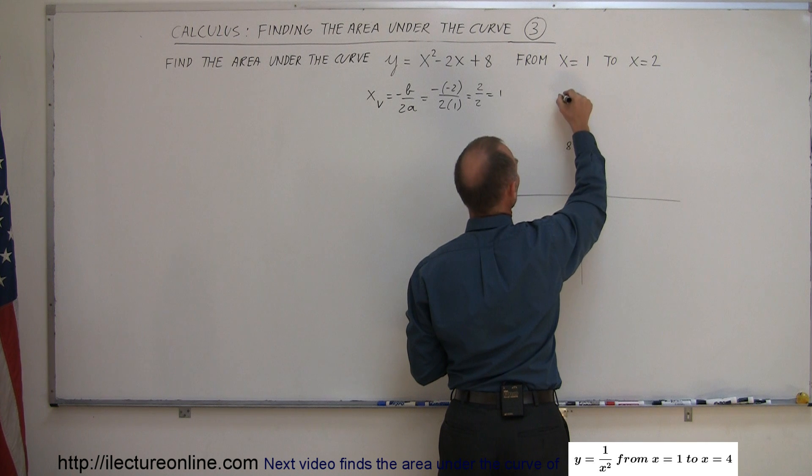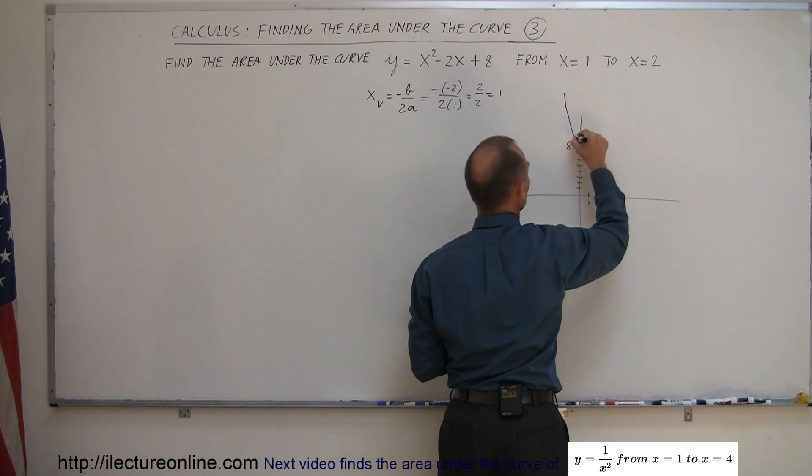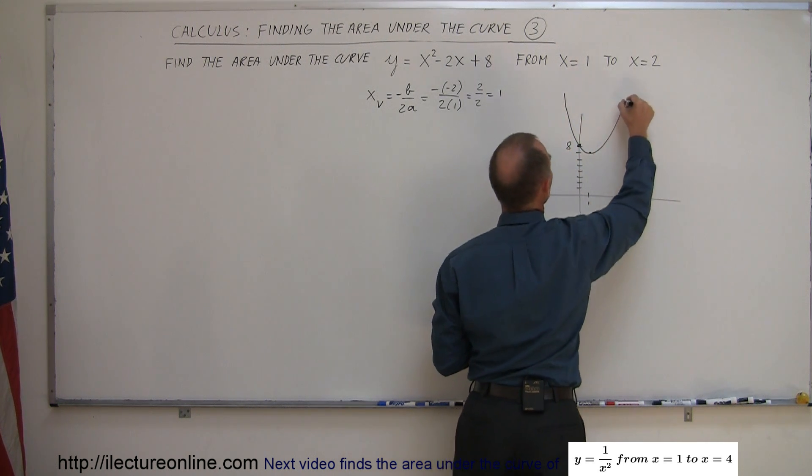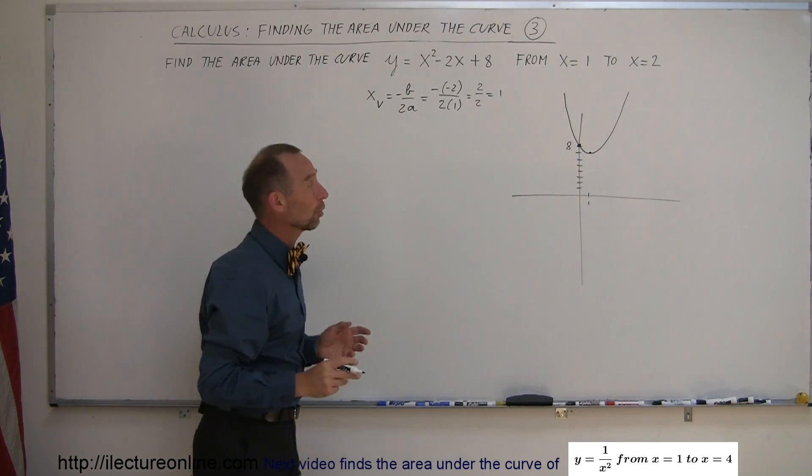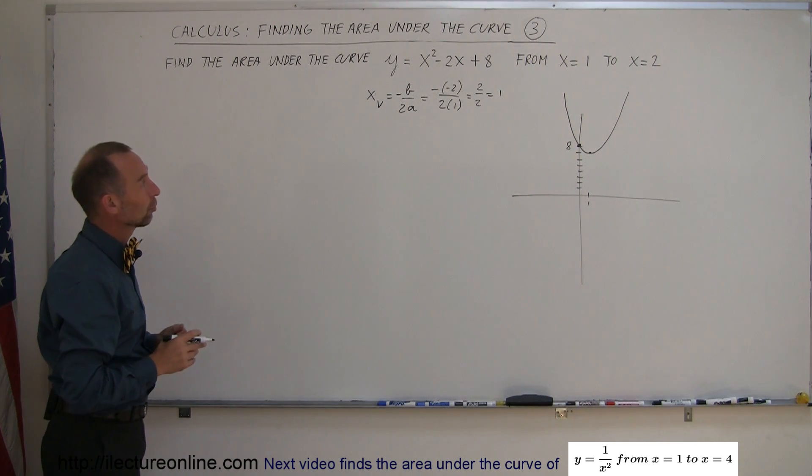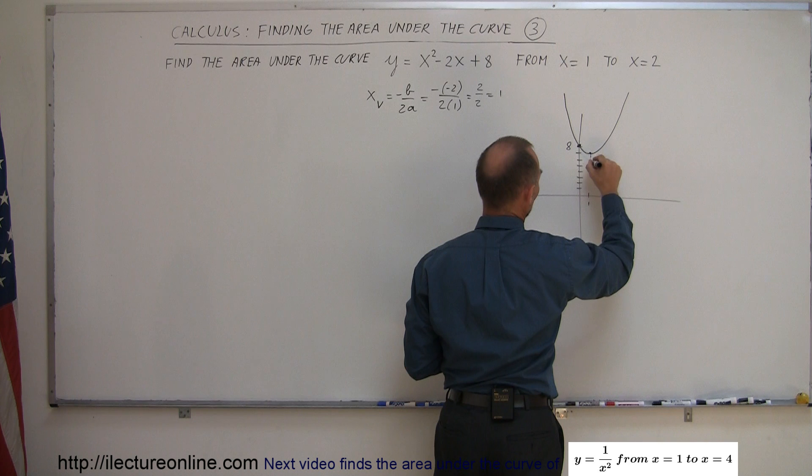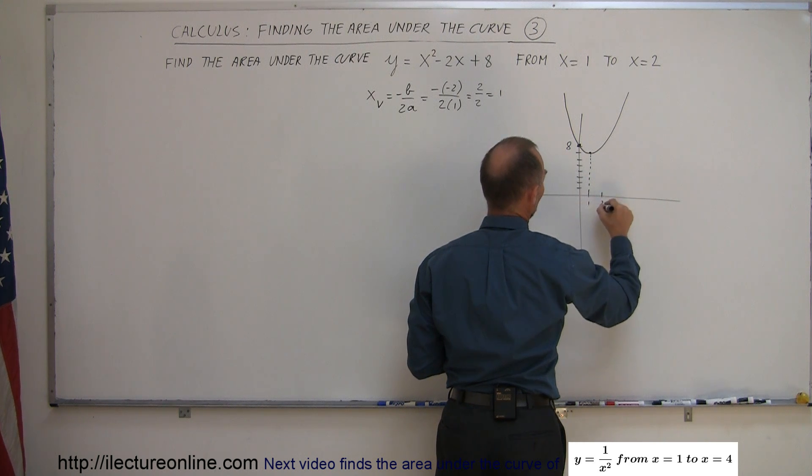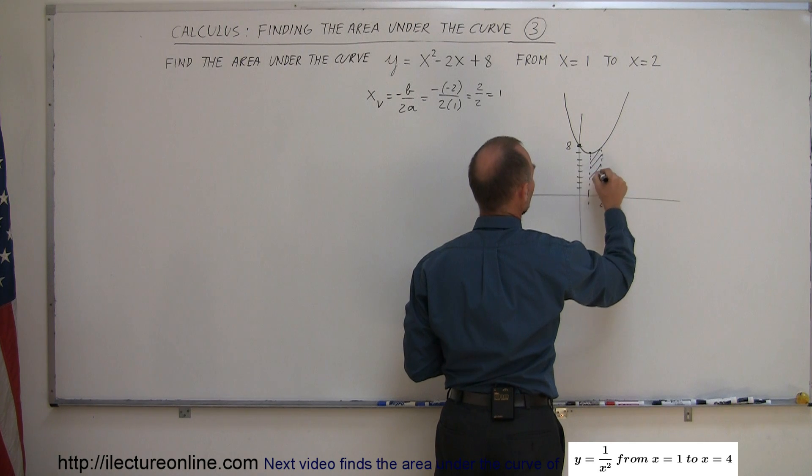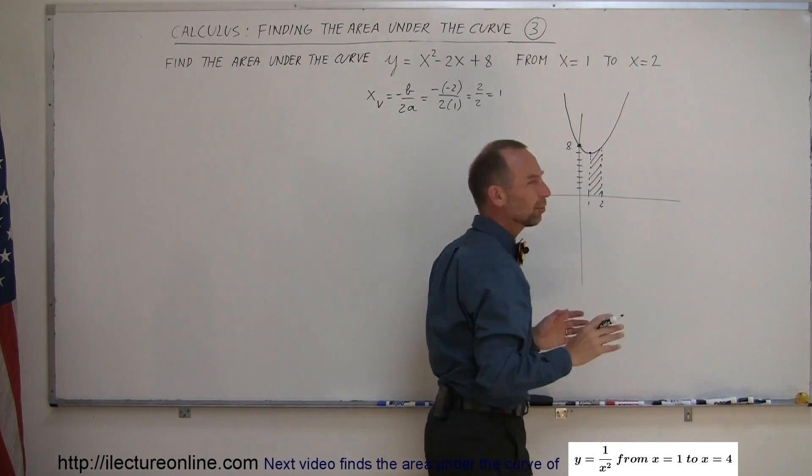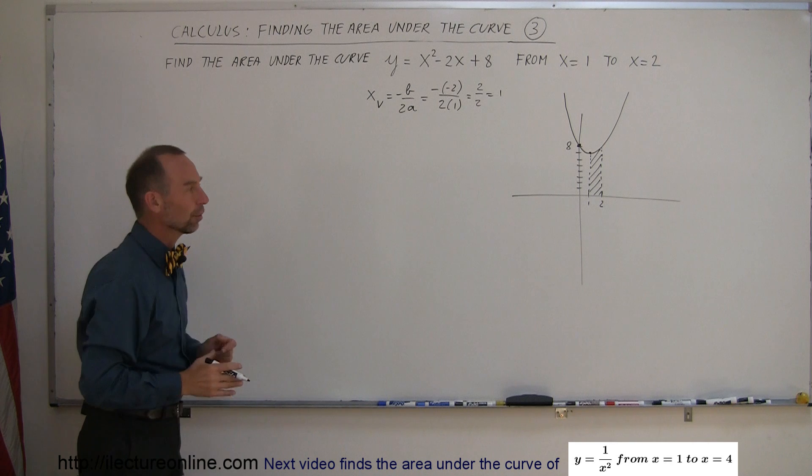The parabola looks like this. It's fairly easy to graph a parabola even if there are no roots. Now we're supposed to find the area under the curve of this function from x equals 1 to x equals 2. Let's draw a line from x equals 1 down, and then at x equals 2, another line down. We're looking for the area underneath the curve. It always helps to have a visual picture of what we're trying to do.